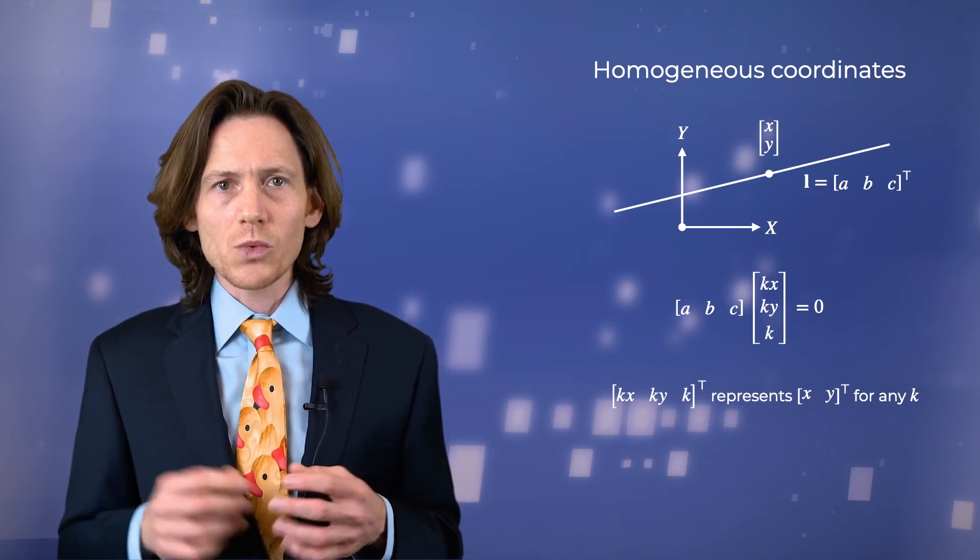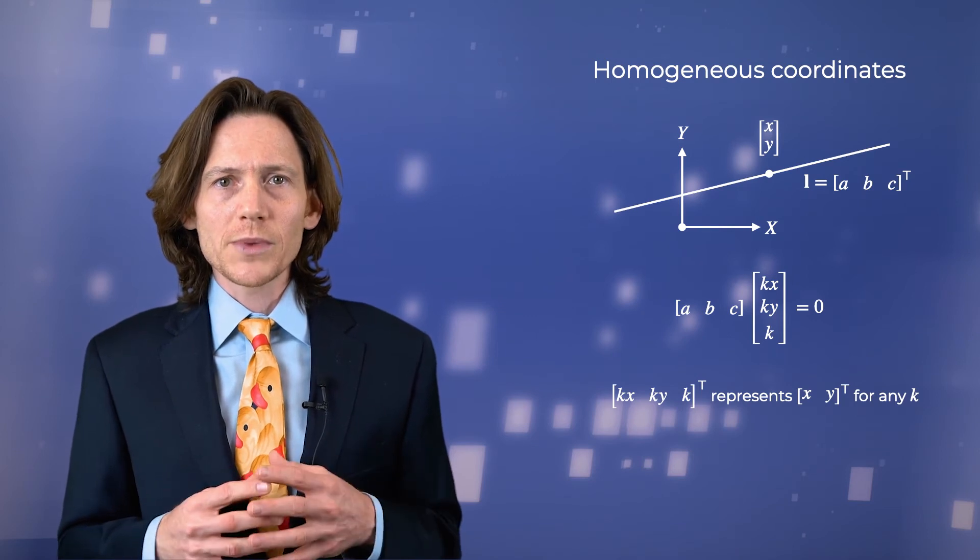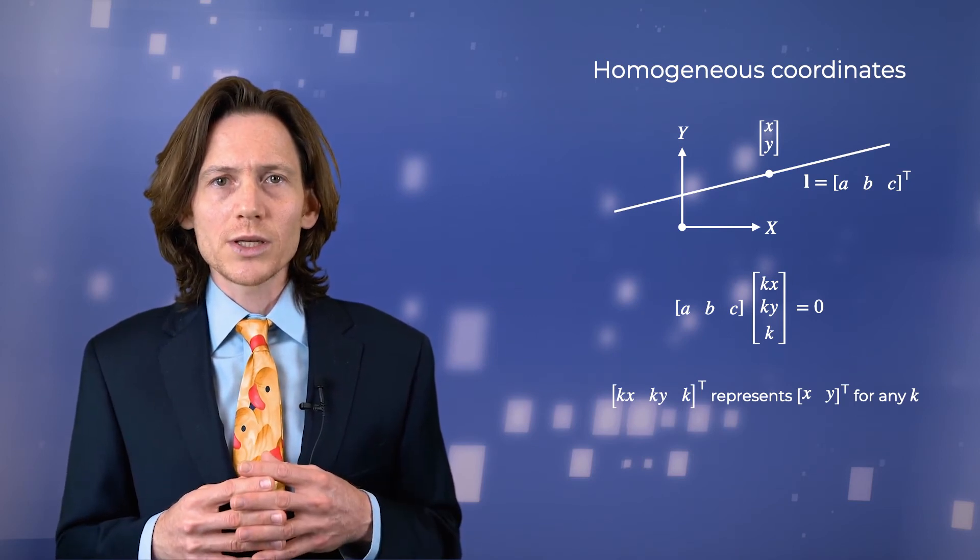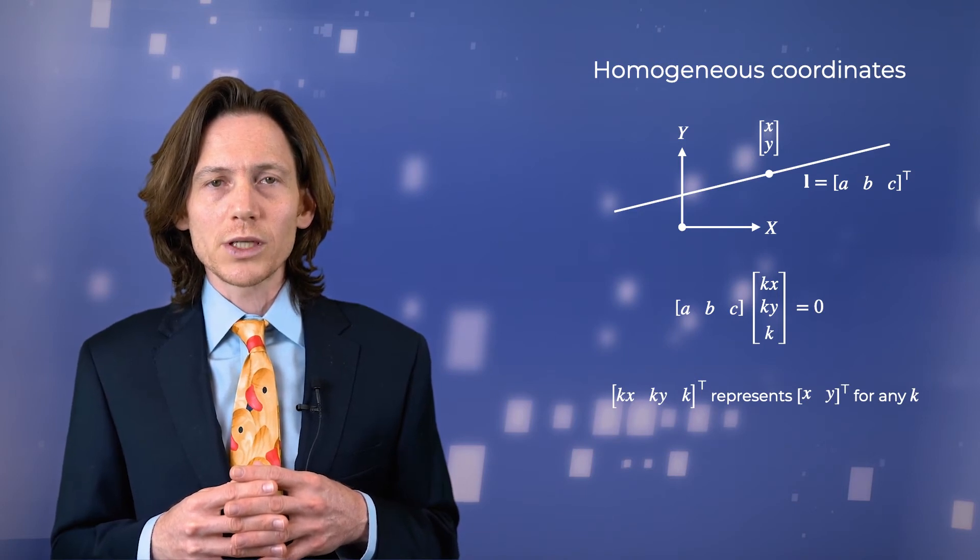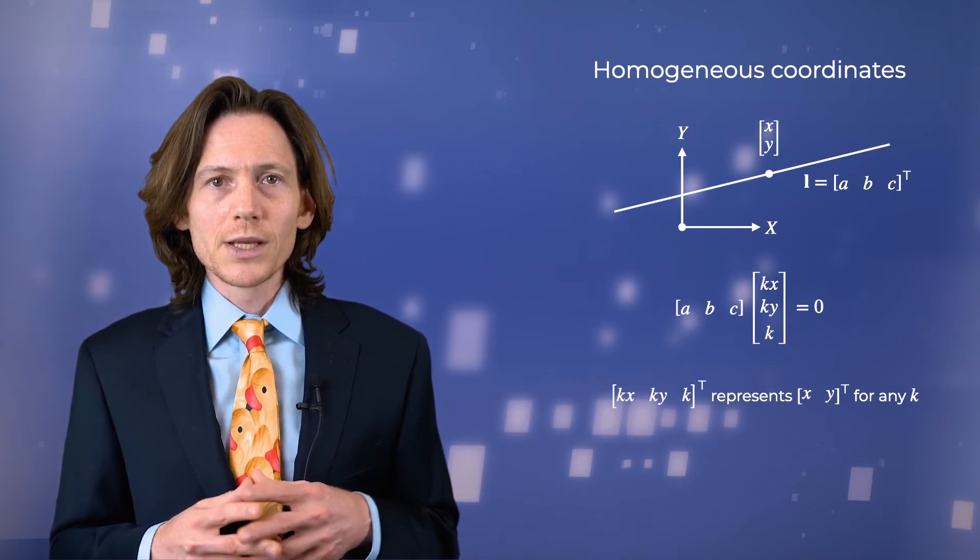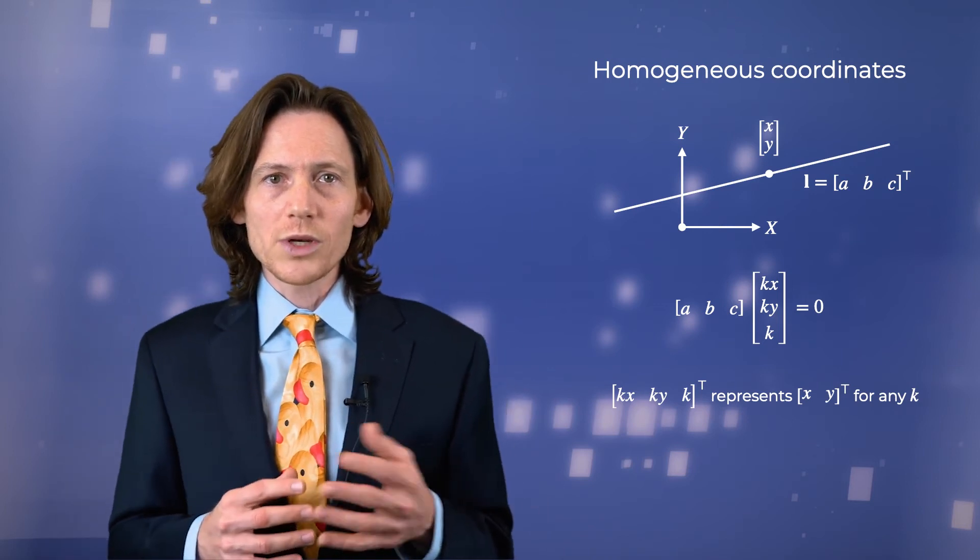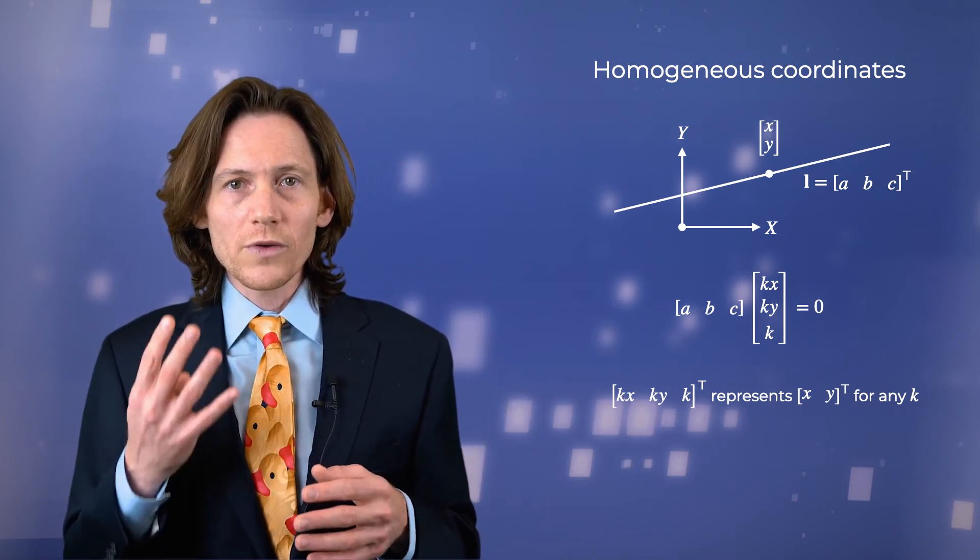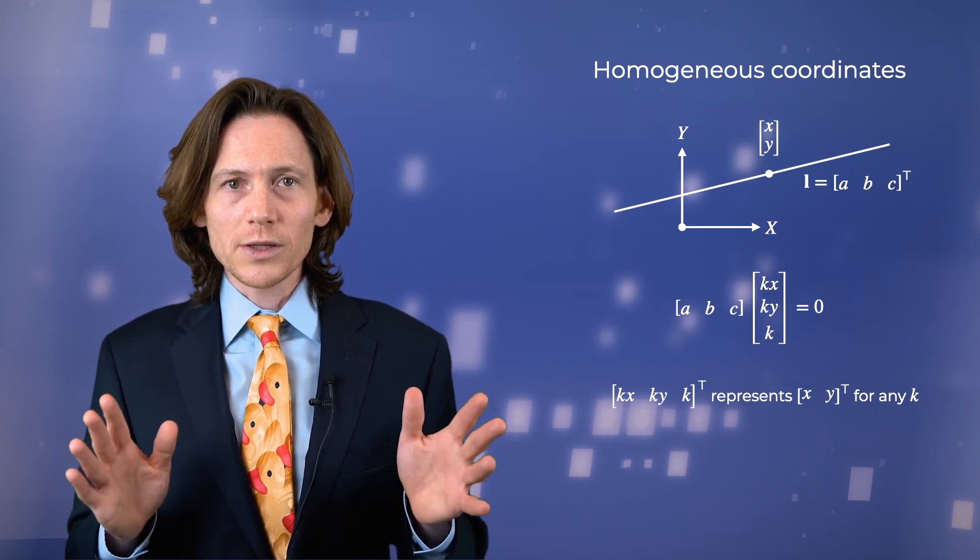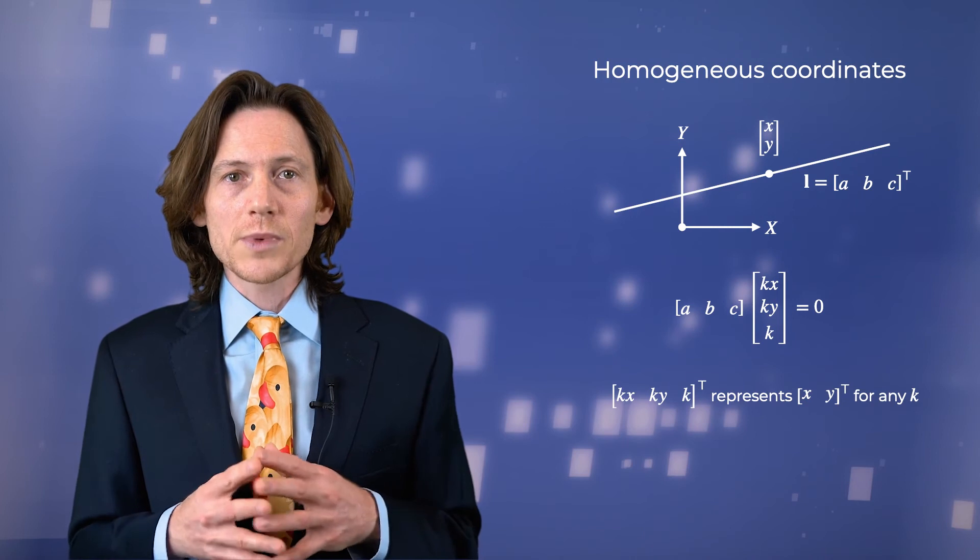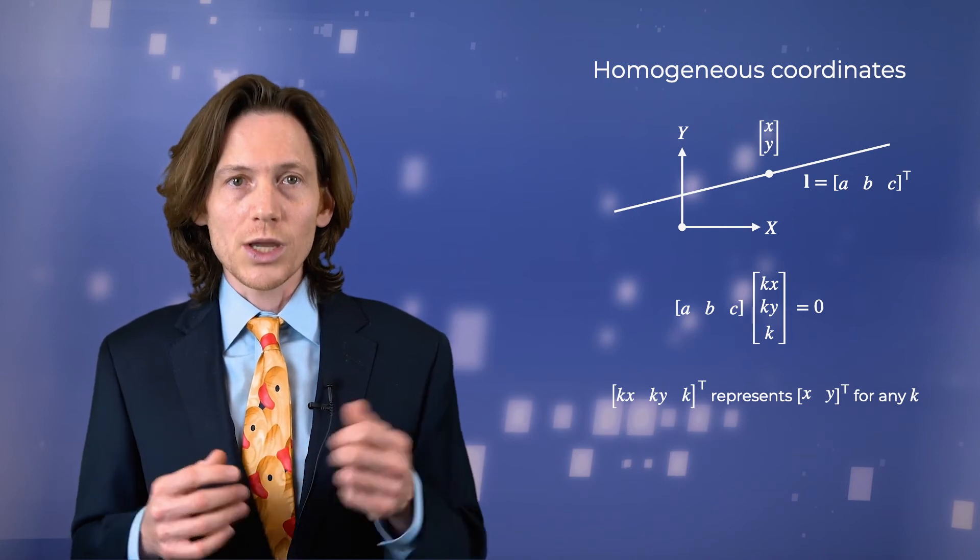Similarly, we can multiply the three-vector representation of the point by a non-zero constant and the result will still lie on the line. For any non-zero scalar k, the three-vector [kx, ky, k] represents the same point (x, y). This is referred to as homogeneous coordinates or projective coordinates. Similarly, the homogeneous coordinates of a 3D point are given by the scale-invariant four-vector.